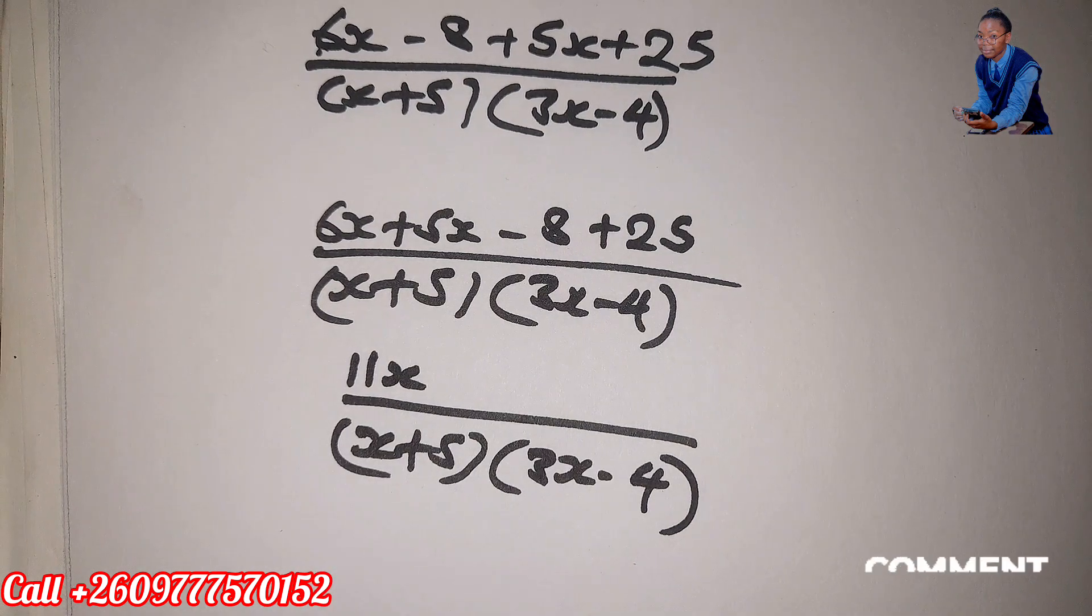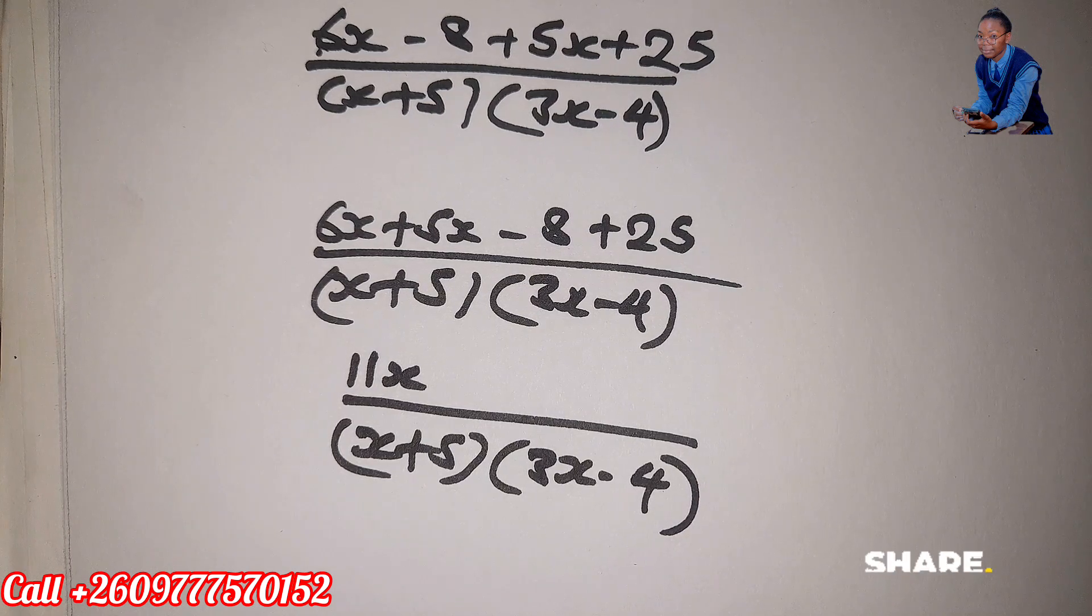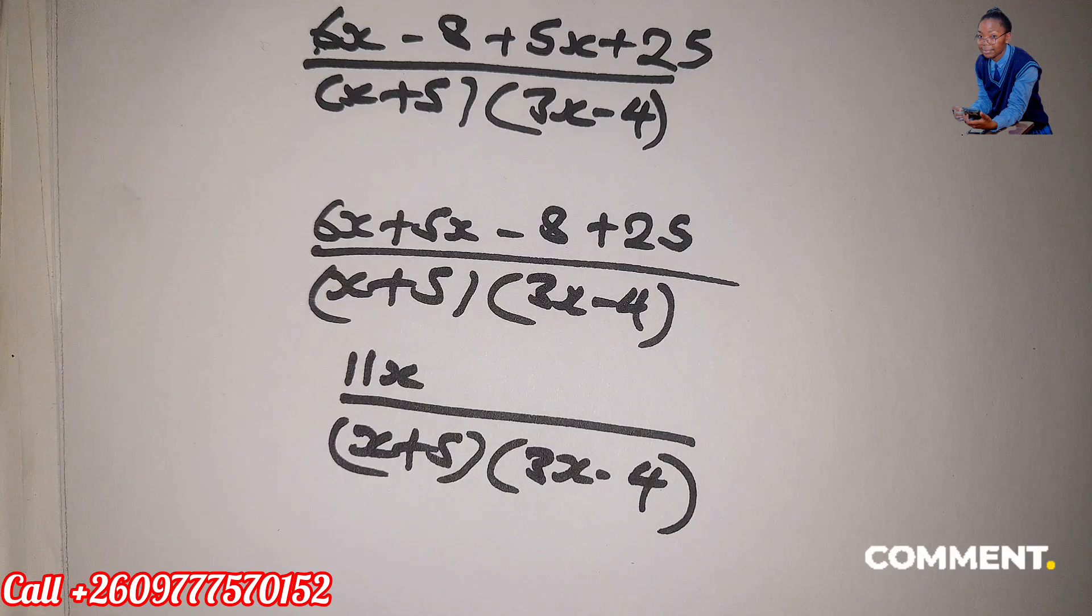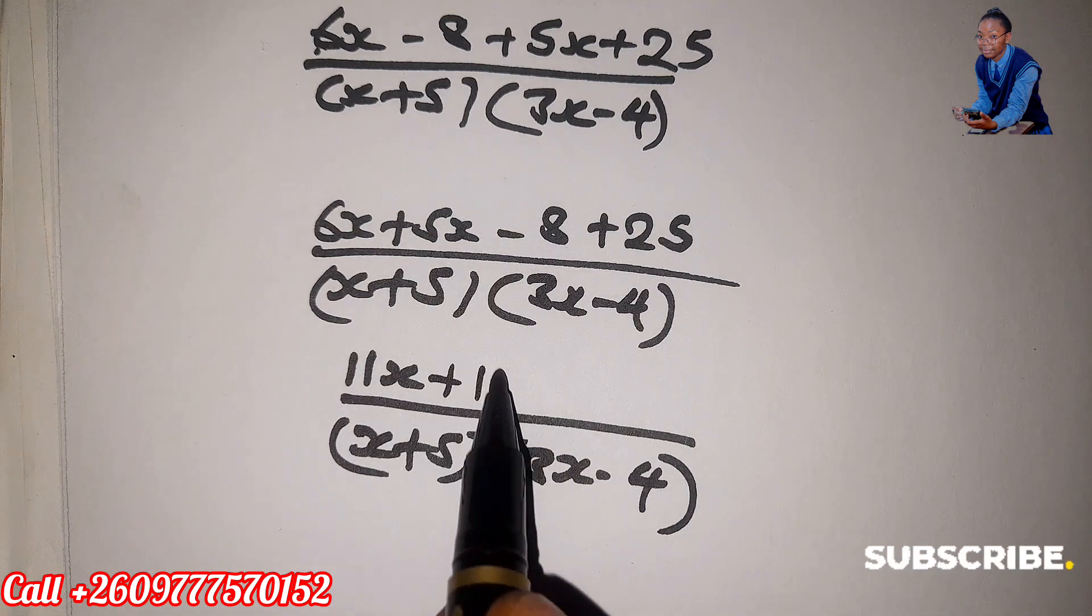Then you have negative 8 plus 25. So negative 8 plus 25, this is giving us 17, which is positive 17.